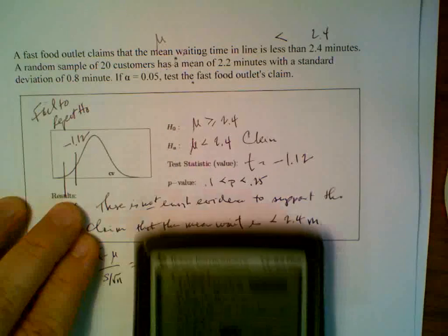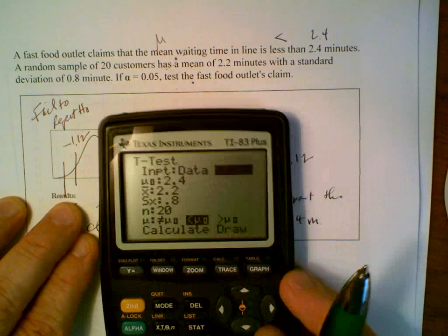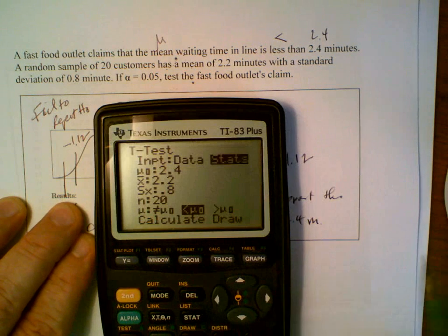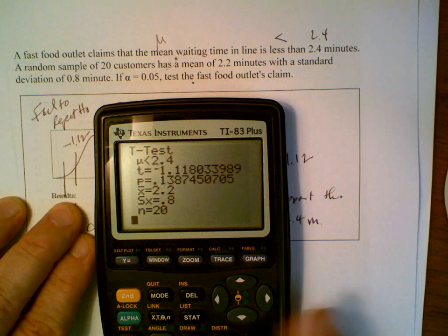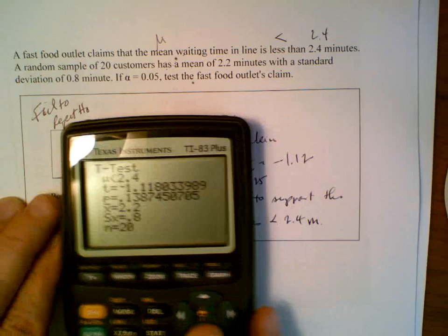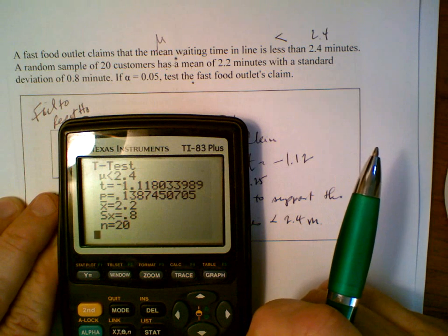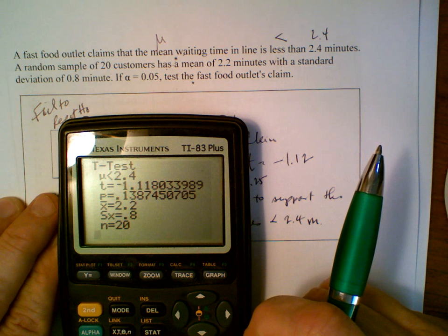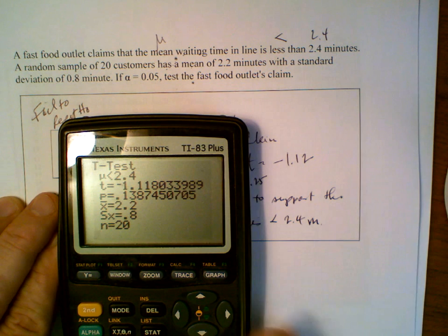We highlight the middle character there and then we calculate. We'll come down here and calculate. And we get, right on the money, minus 1.12. And our p-value is 0.1387.